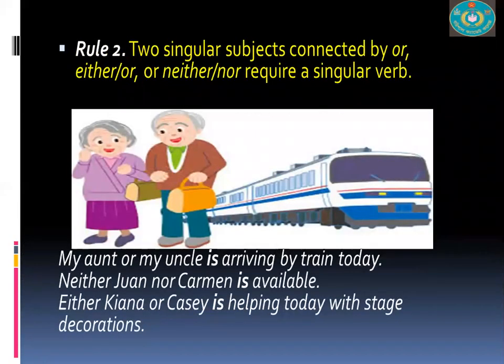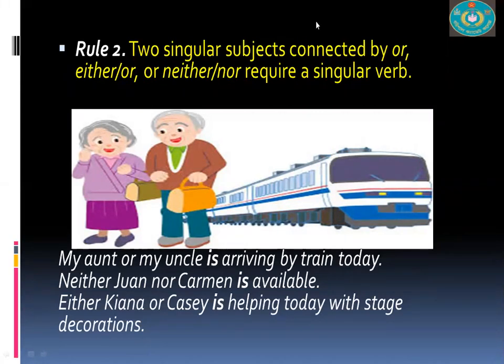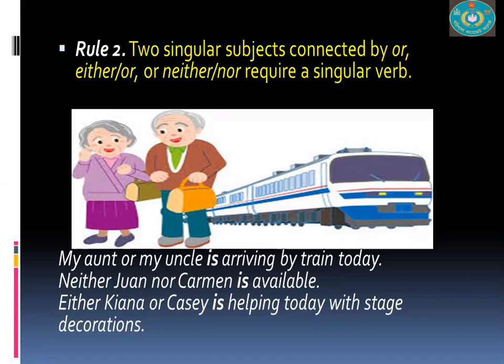Rule Two: Two singular subjects connected by 'or', 'either...or', or 'neither...nor' require a singular verb. Examples: 'My aunt or my uncle is arriving by train today.' 'Neither Joan nor Carmen is available.' 'Either Kiana or Casey is helping today with space decoration.' The rule says two singular subjects connected by or, either-or, or neither-nor require a singular verb.